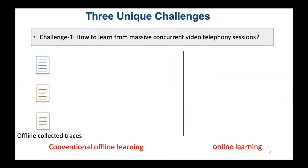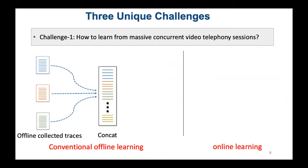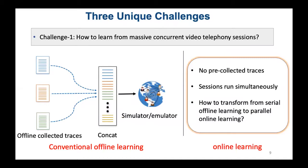In conventional offline learning, one can collect concrete network traces from individual users and fit them into a simulator or emulator to train a reinforcement learning model. But for online learning, there are no pre-collected traces. Instead, a massive number of video sessions run simultaneously, during which the learning algorithm needs to evolve with each session in real time. So the first challenge is how to learn from massive concurrent video telephony sessions in real time.